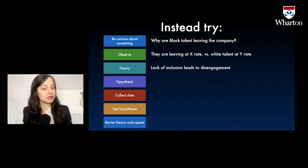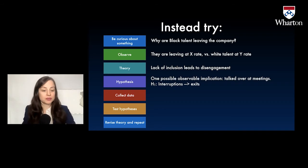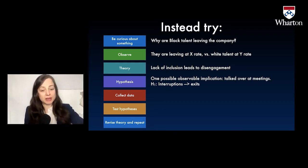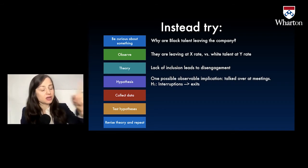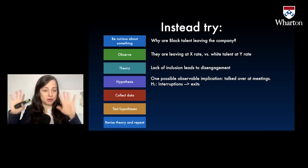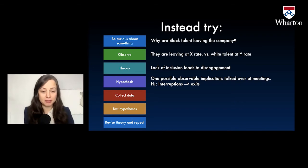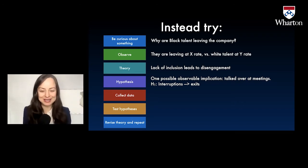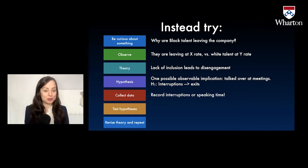Instead, try the old scientific method and ask a question: why are Black talent leaving the company? Observe — they're more likely to leave. Have a theory — maybe it's a lack of inclusion. Come up with an observable implication based on that theory: if you're getting talked at, talked over at meetings, or interrupted, you don't feel you're included and you're more likely to leave. This is just one view — there could be a lot, and probably ask Black employees what they think as opposed to listen to me think about what the issues might be.